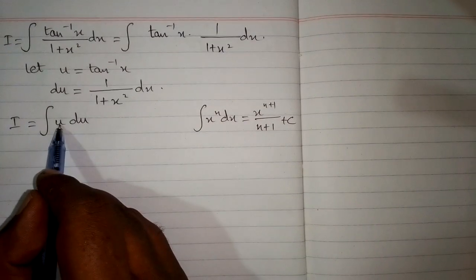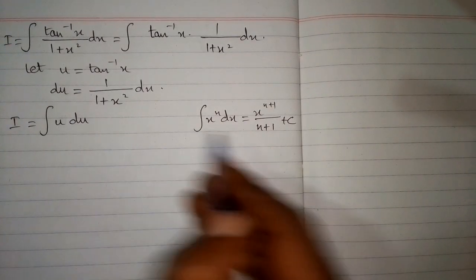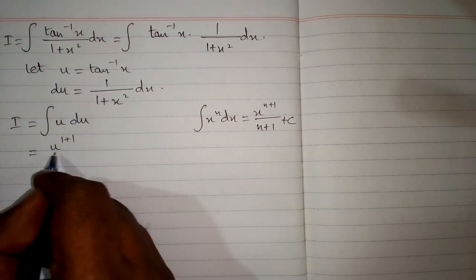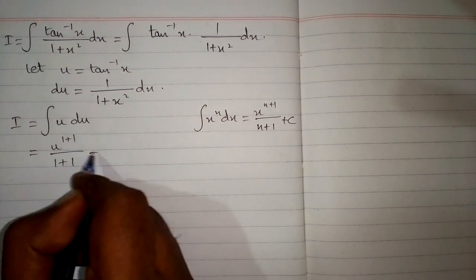Here we have u to the power 1, so we get u to the power 1 plus 1 divided by 1 plus 1 plus c, which gives us u squared over 2 plus c.